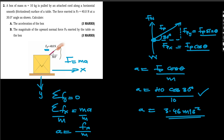Next, we find the magnitude of the upward normal force. This force acts in the y-direction, vertically. We sum all forces acting in the vertical direction. Since there is no motion in the y-direction, the summation of forces in the y-direction must equal zero.